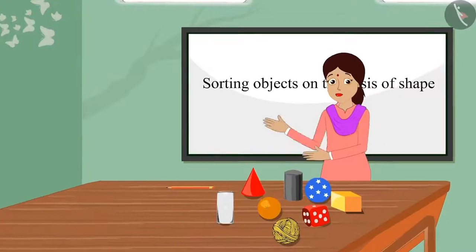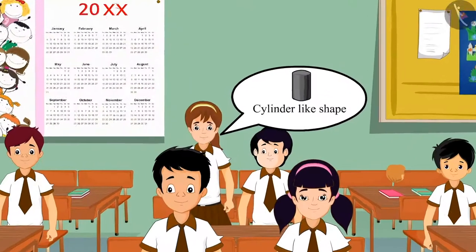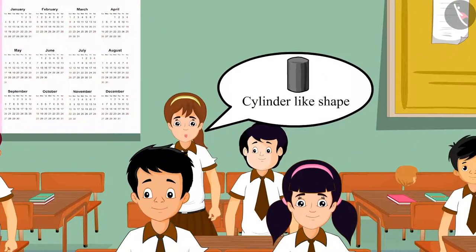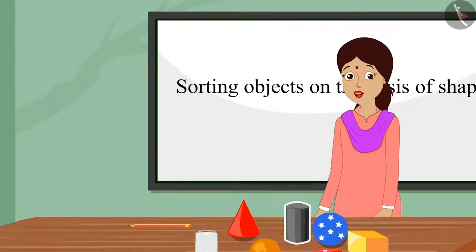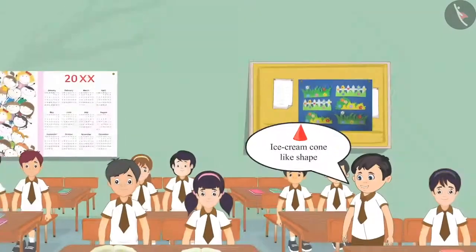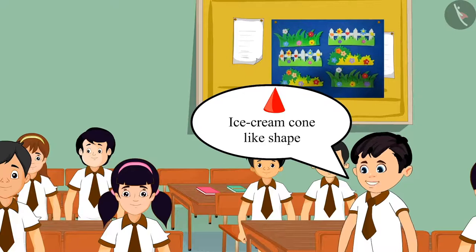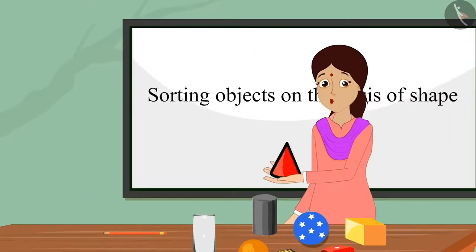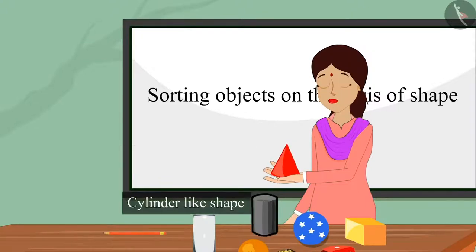Children, can you recognize the shape of this object? Arti answers: 'It looks like a cylinder.' Very good, Arti — well said, this has a cylinder like shape. Chotu says: 'This has an ice cream cone like shape.' Very well, Chotu — well said, this has a cone like shape.